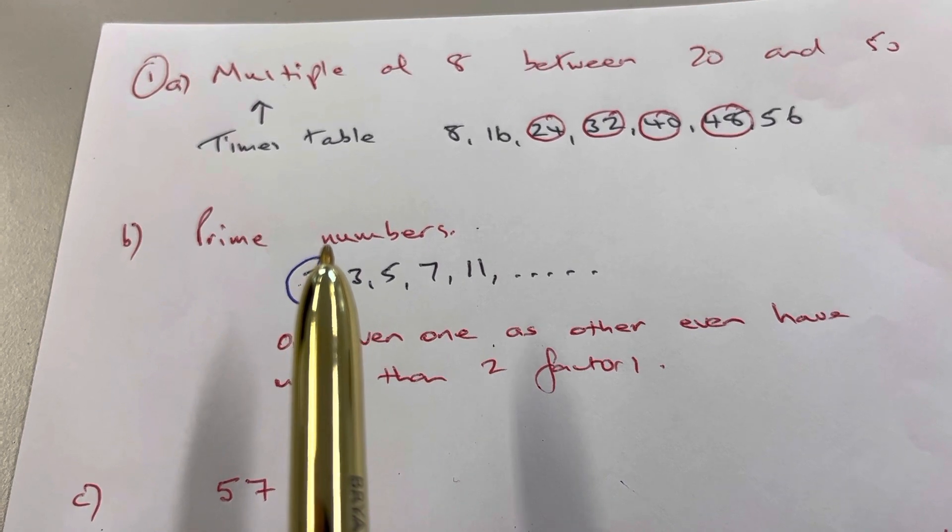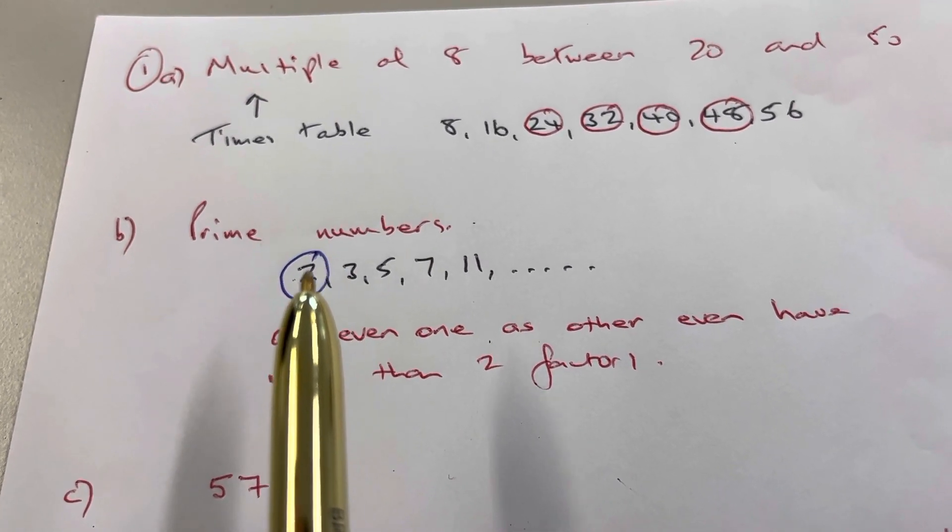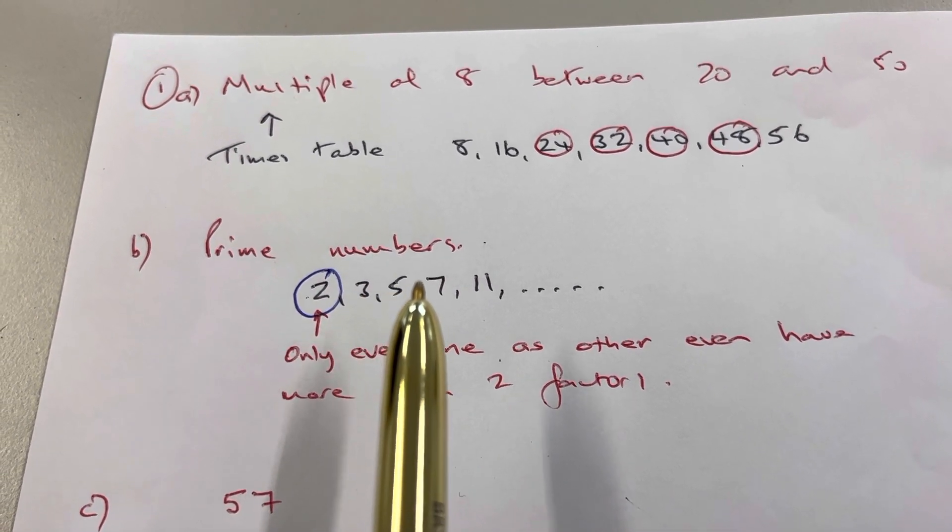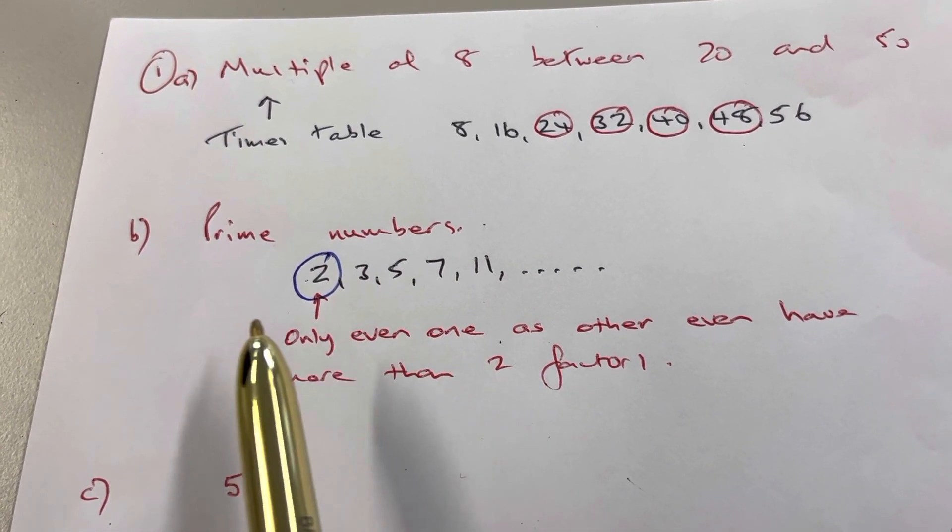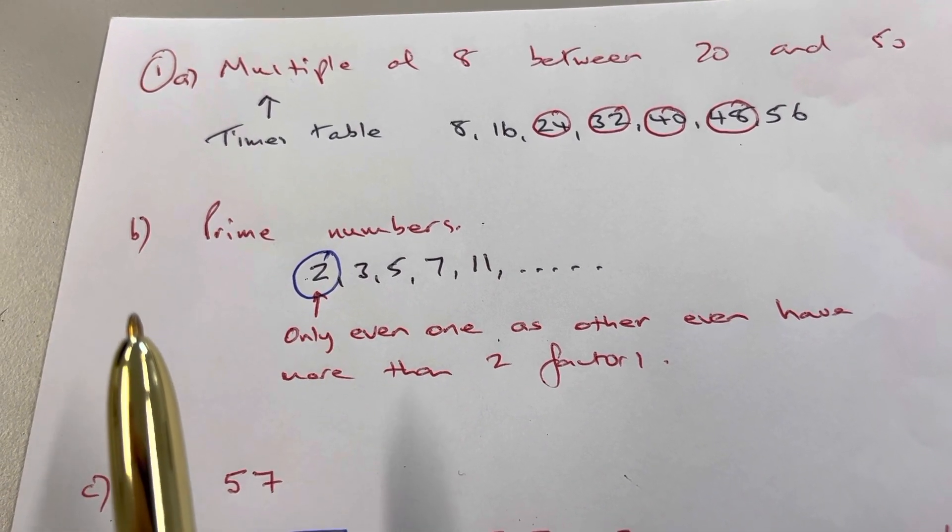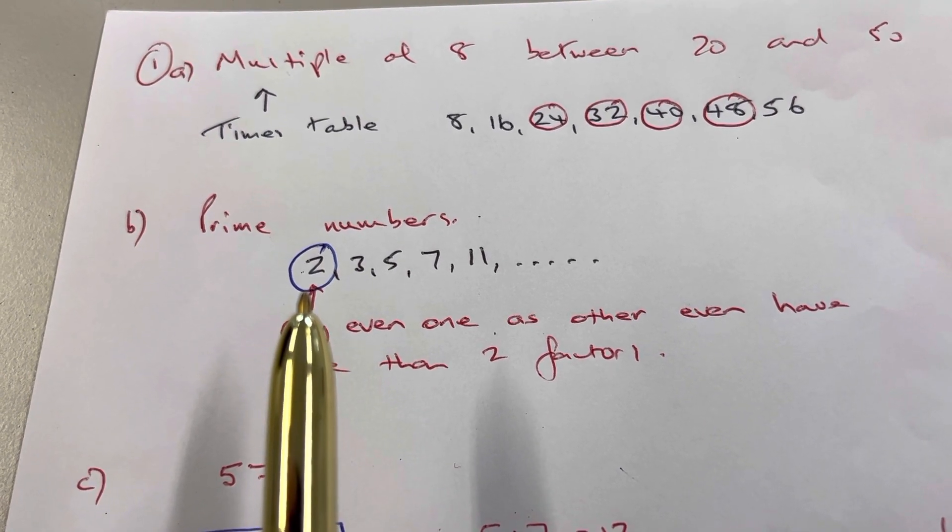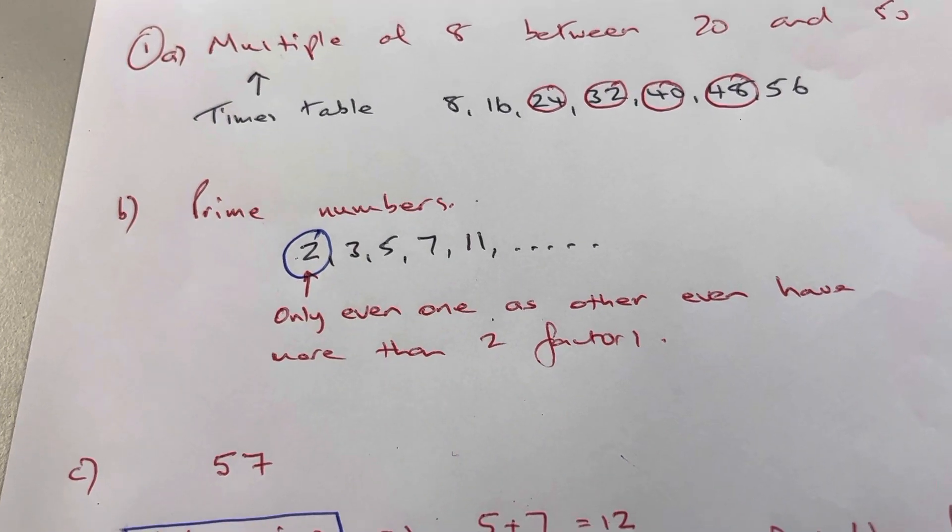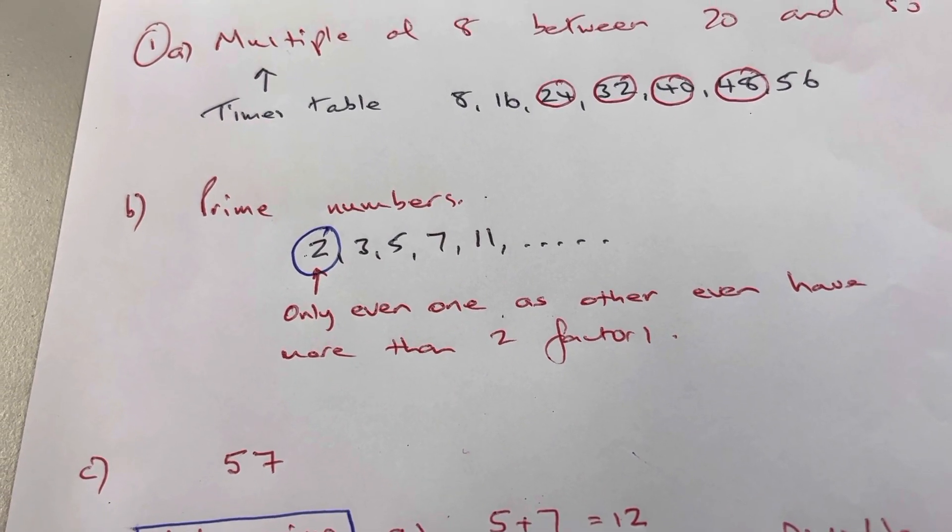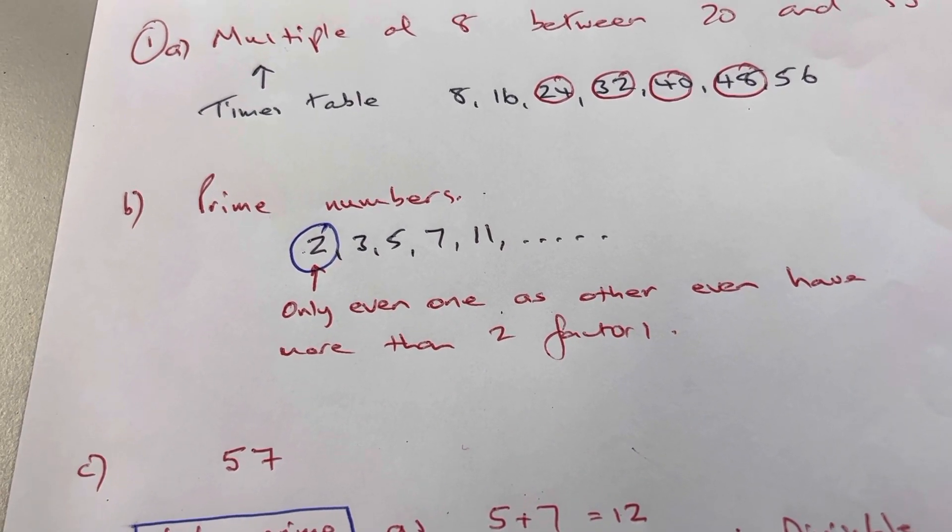Prime numbers, exactly two factors, so 2, 3, 5, 7, 11, etc. are the only ones where it is itself and 1. 2 is the only even number there. Any other even numbers would have more than two factors and would not be prime.